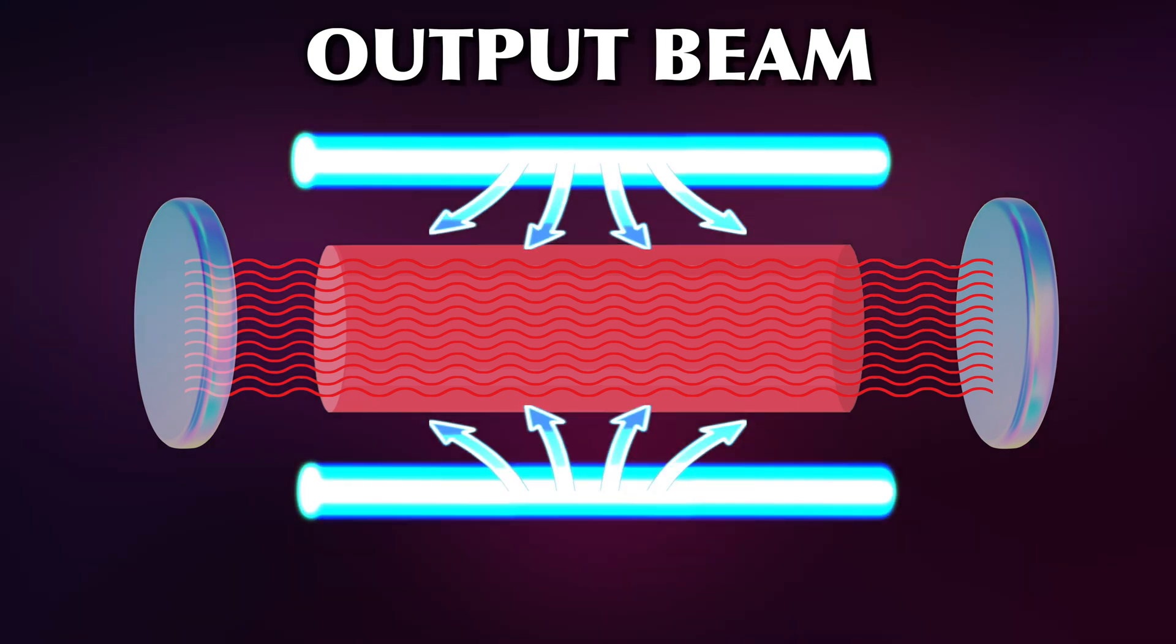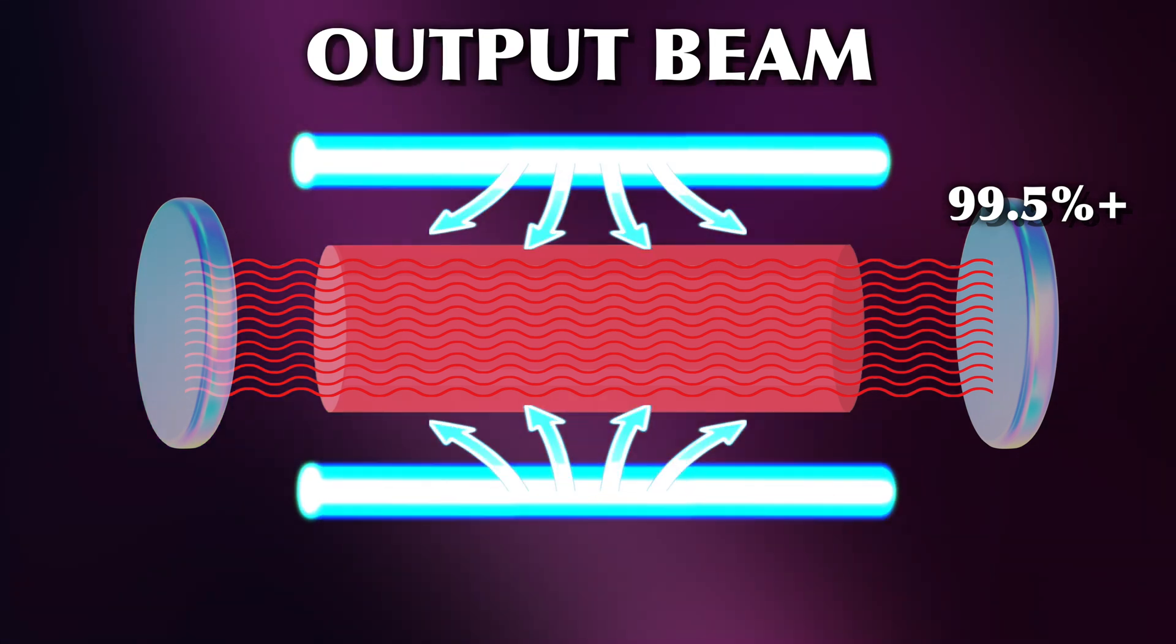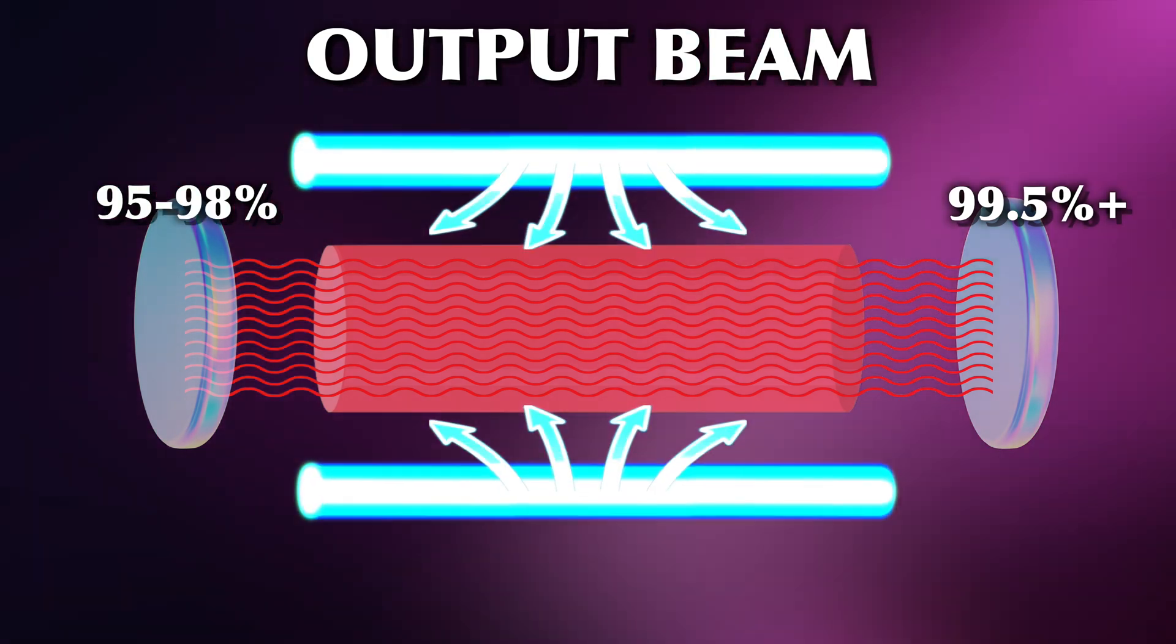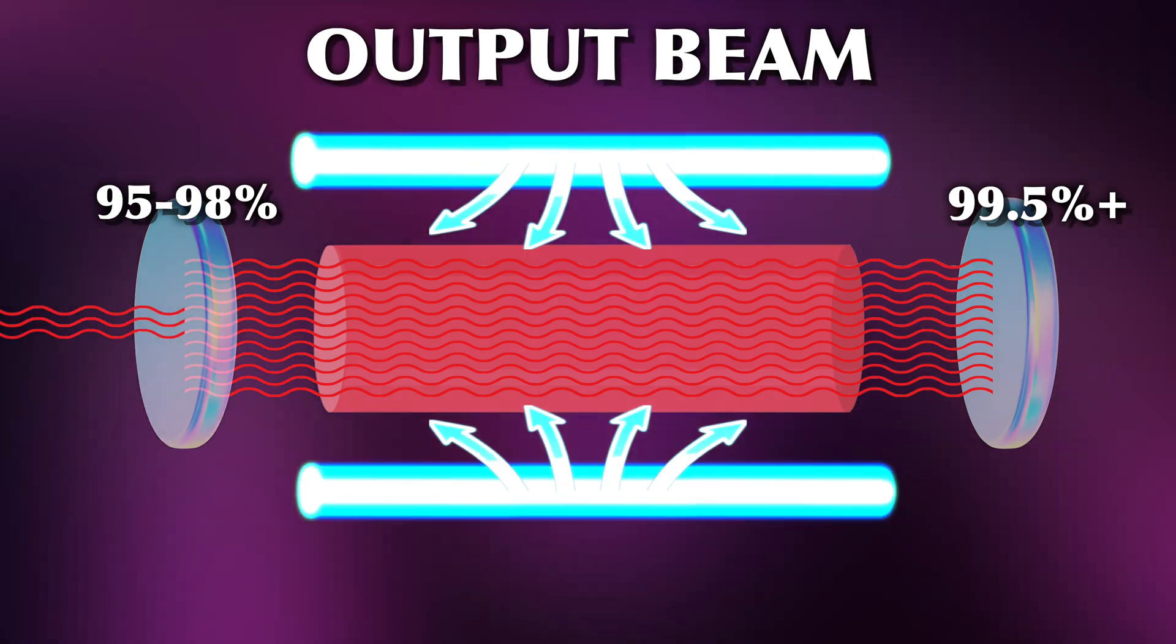But if the laser is kept between two mirrors, how will it ever be able to leave the apparatus? Well, in reality there are no 100% reflective mirrors. Some portion of the light will always get through. We want one side to be as perfect as possible, so here we typically have a 99.5% or even more effective mirror. On the other side though, the mirror is only 95 to 98% reflective. Why? Because we want a small part of the beam to leave. And this is the beam emitted from the laser. It doesn't leave the resonator through a hole. It just passes through an imperfect mirror.